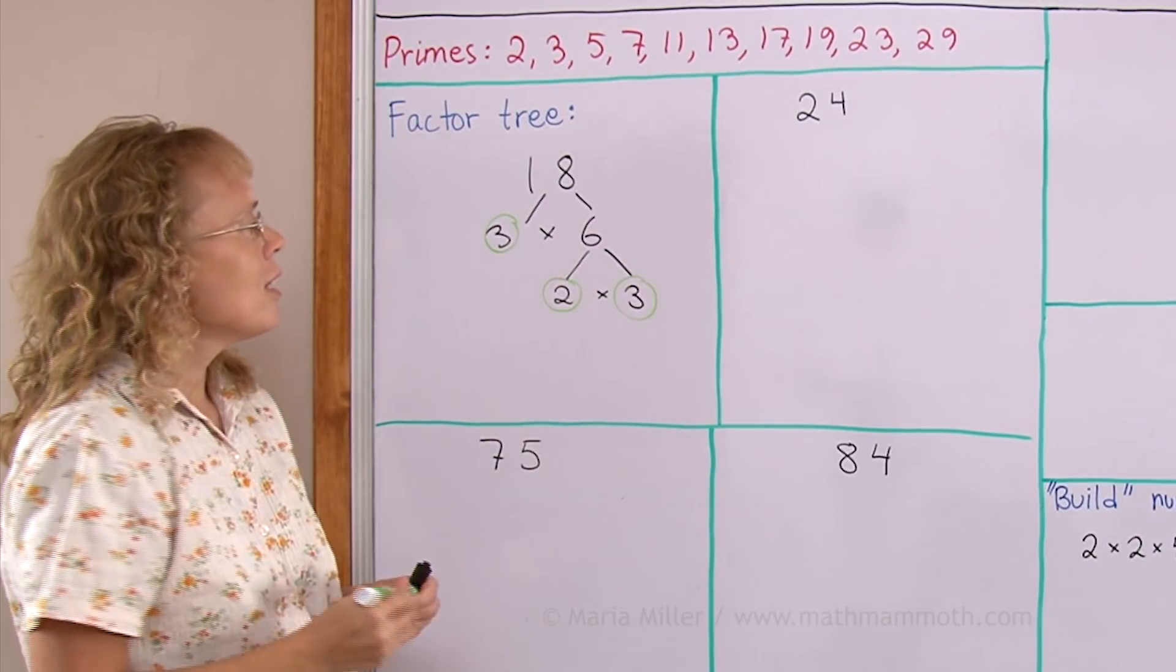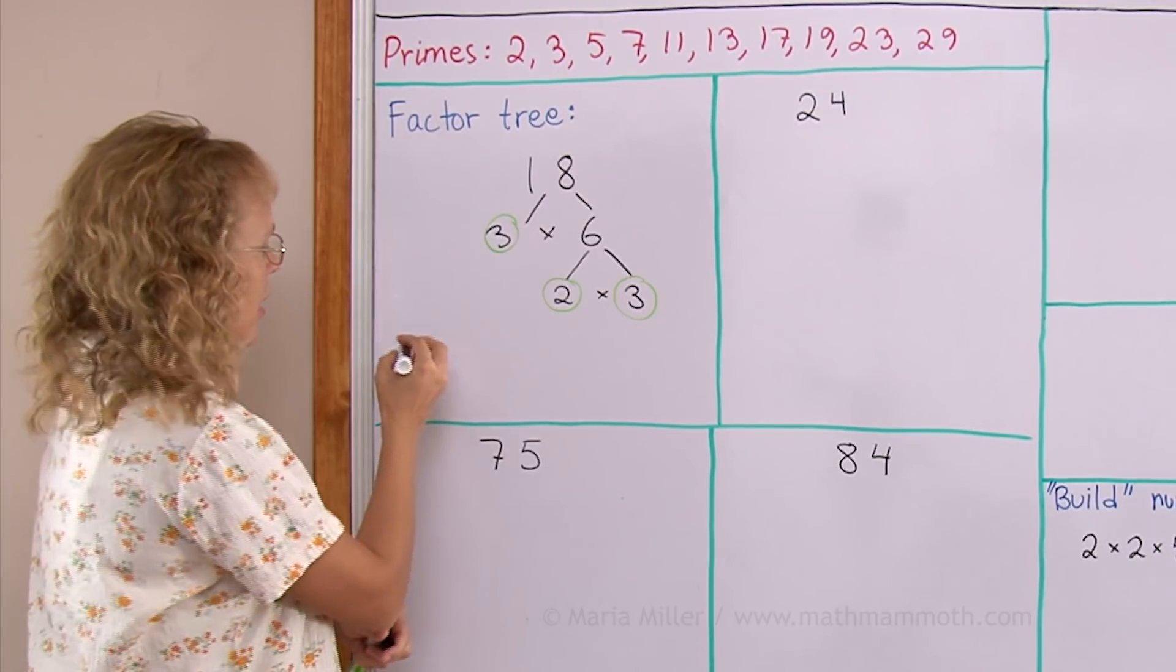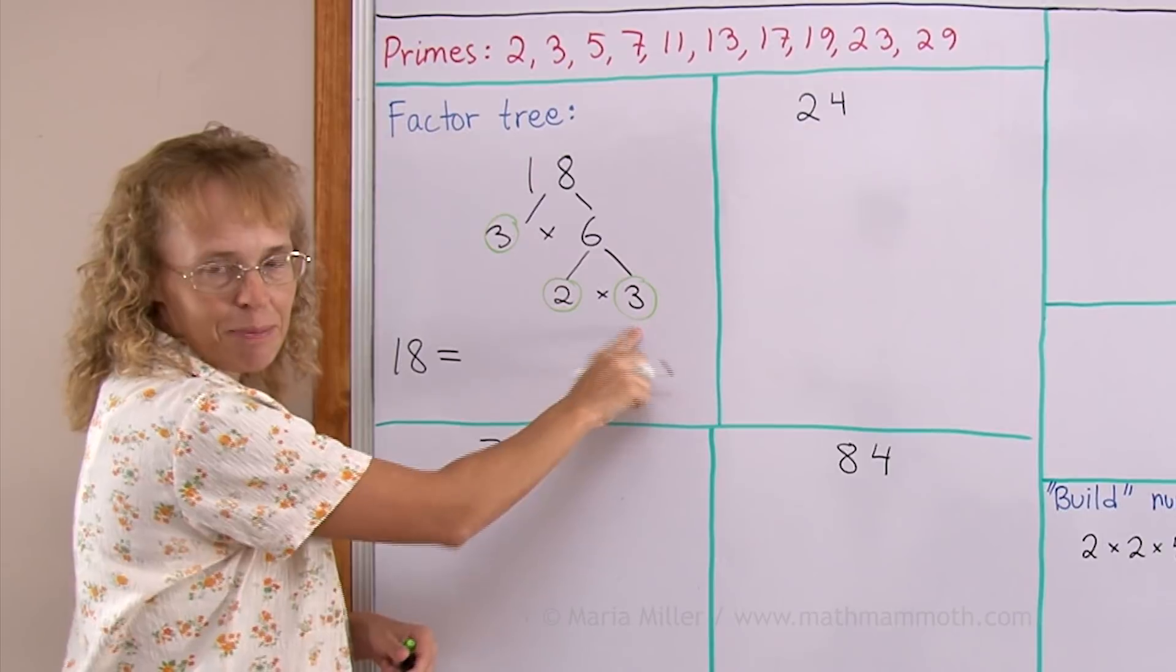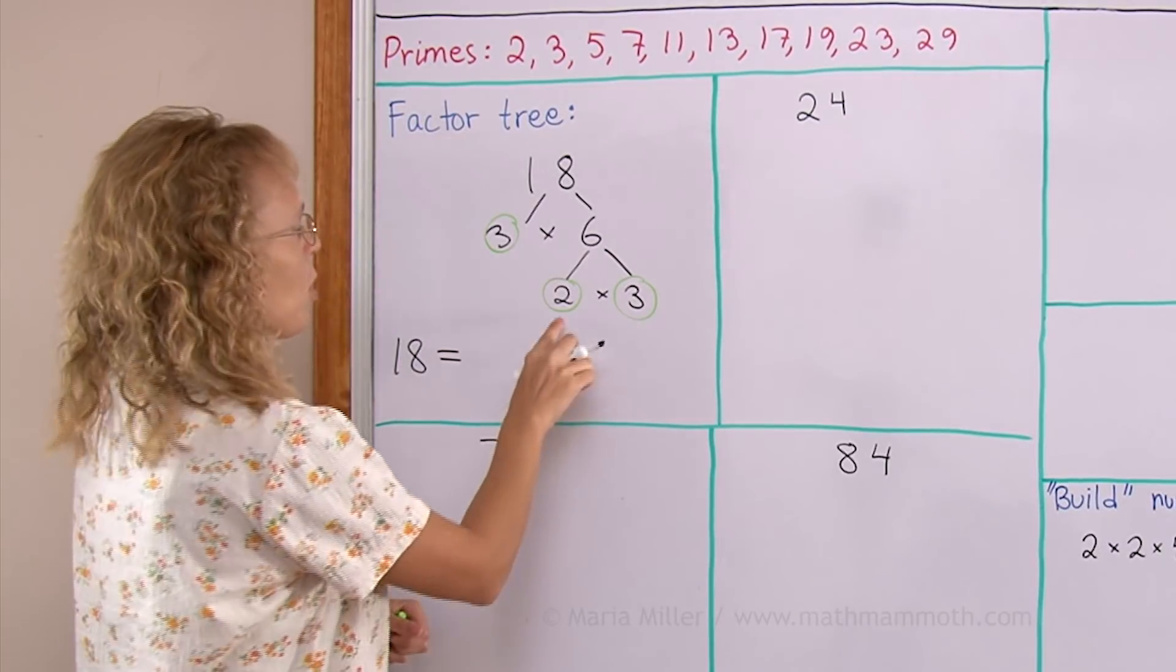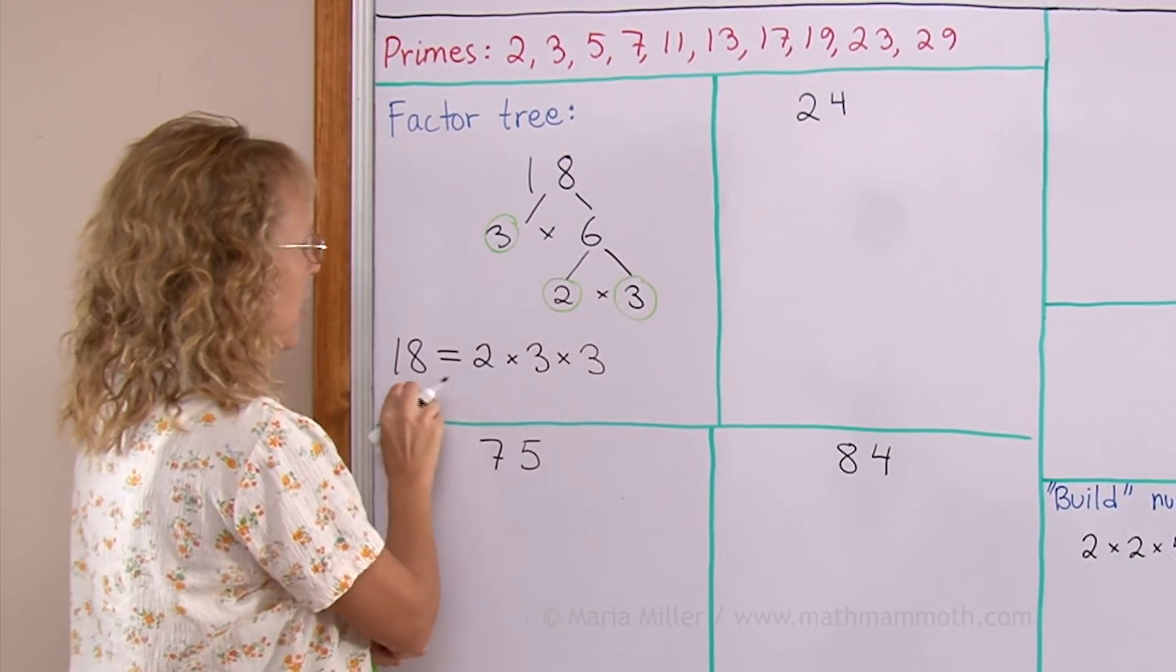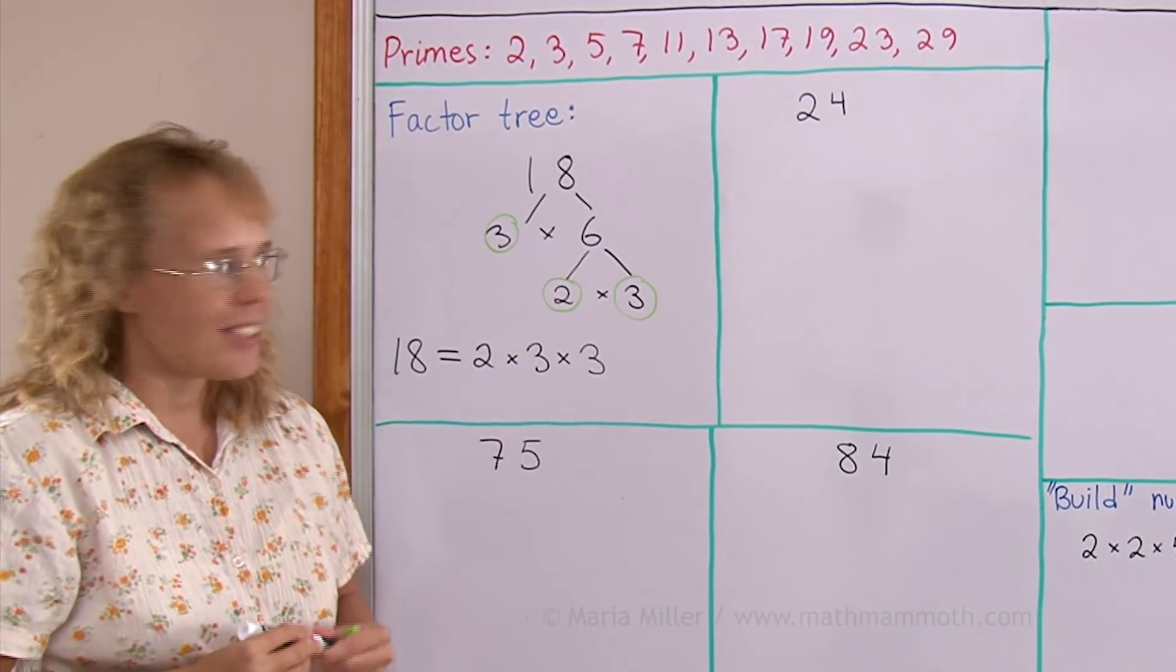I write 18 equals this times this times this. But I will start with the smallest number: 2 times 3 times 3. This here is the prime factorization of 18.